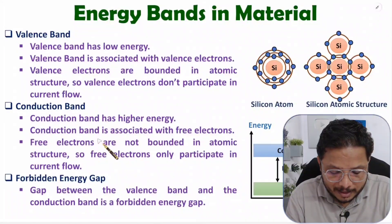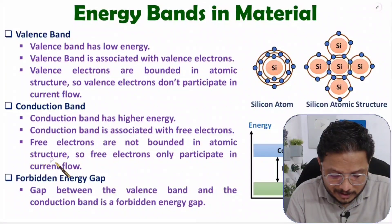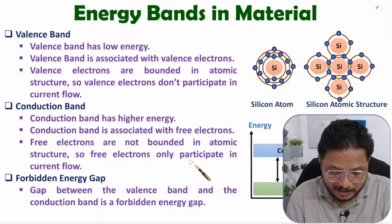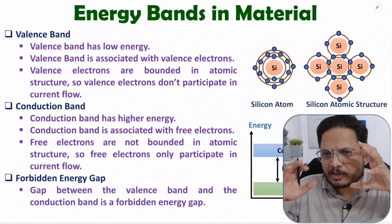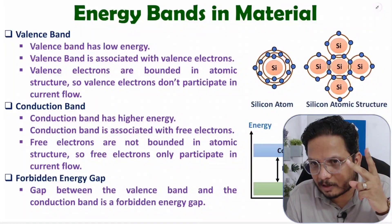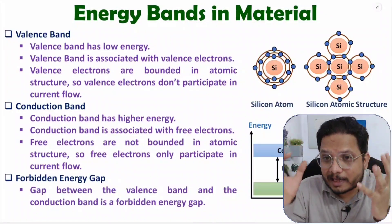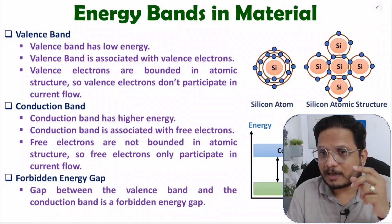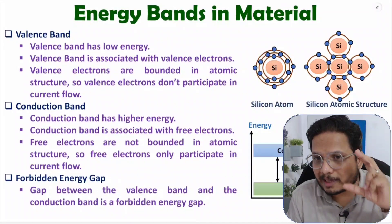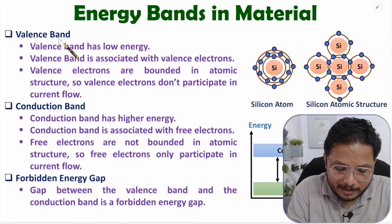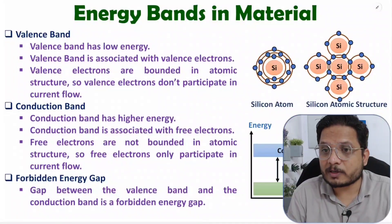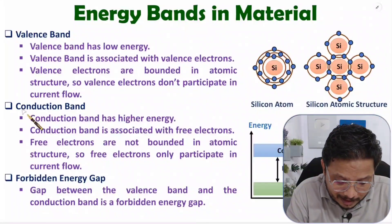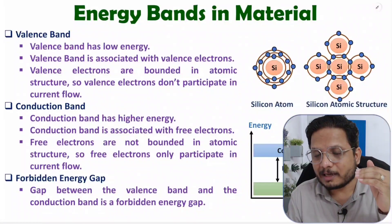Free electrons are not bounded in the atomic structure, so they only participate in flow of current. In the structure there are two types of electrons: valence electrons, which are bounded — their associated energy is the valence band which is low; and free electrons, which are not bounded — their associated energy is the conduction band which is higher.